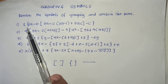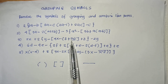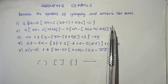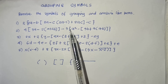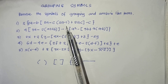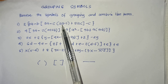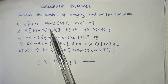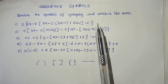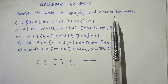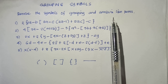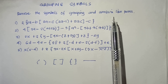So we have the problem, and we're going to look at how we remove the grouping symbols and combine like terms. The best approach is to remove first the grouping symbols in the inner portion. We need to simplify first the inner terms of the grouping symbols.